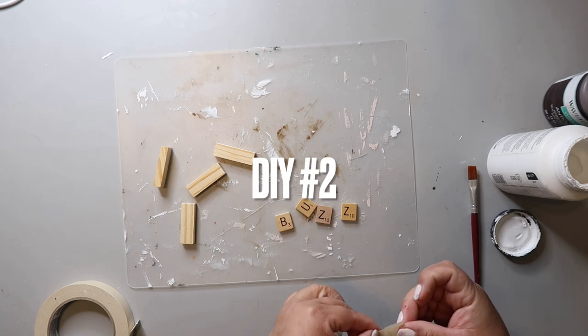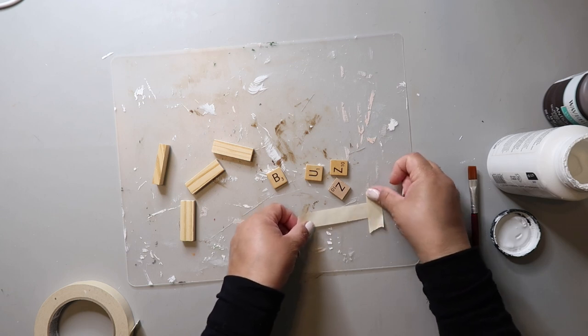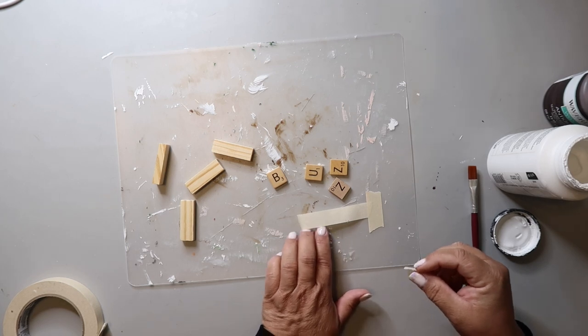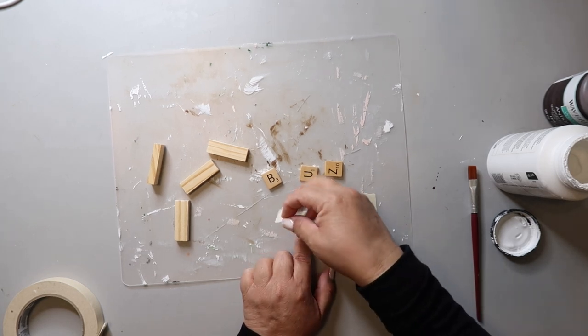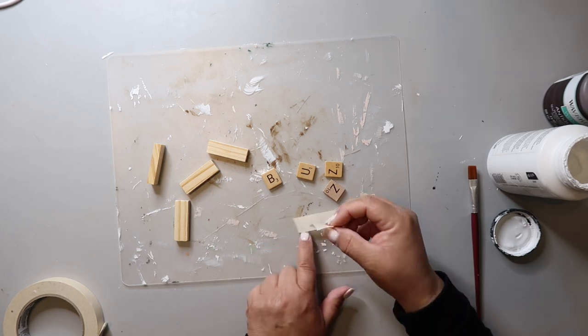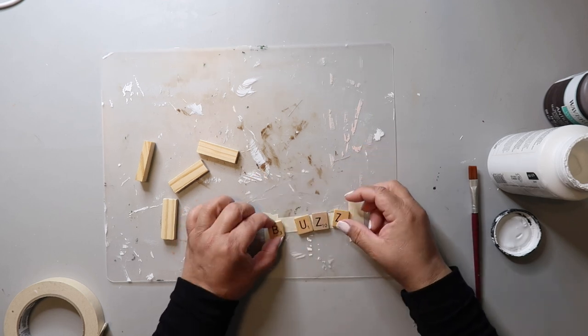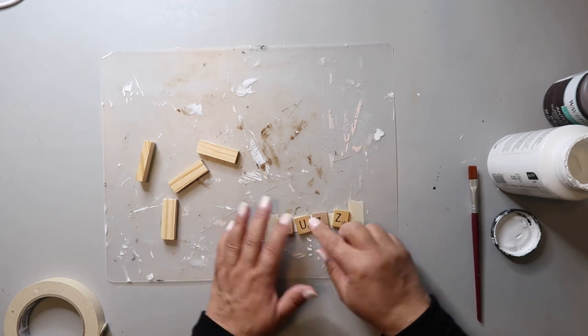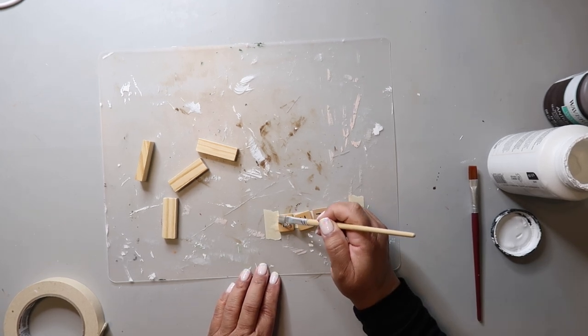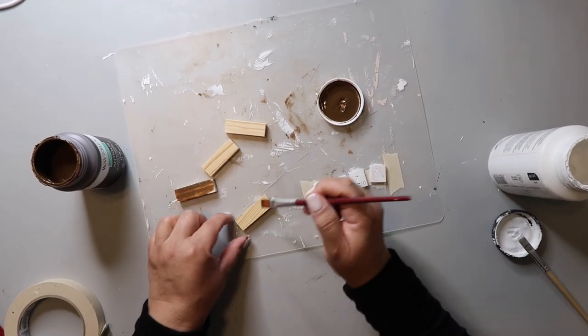Don't blink because DIY number two will buzz right past you if you do. So I took some old Scrabble tiles and I painted them white, but here's a little trick for you. If you need to paint something small, you can do what I did here. I took some masking tape and I taped it down to my painting mat sticky side up. Then you just lay down whatever you're going to paint onto the sticky tape and it'll hold it for you.